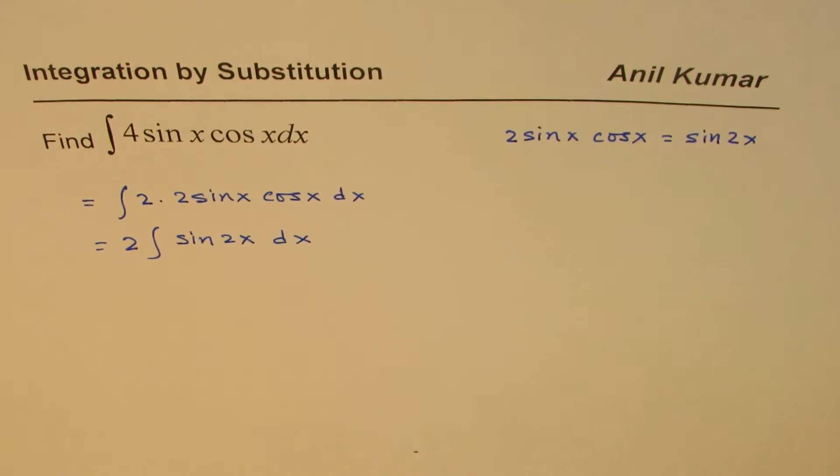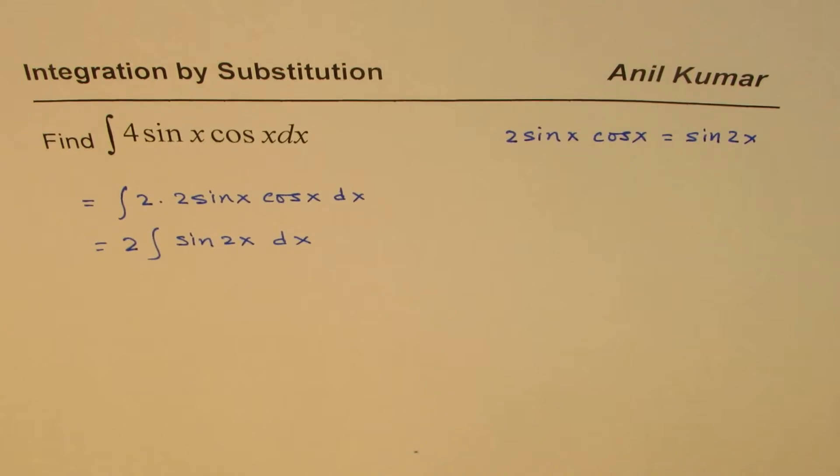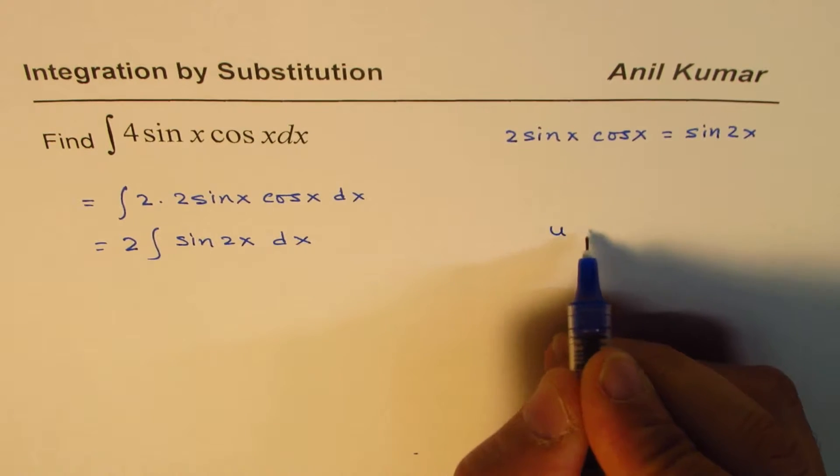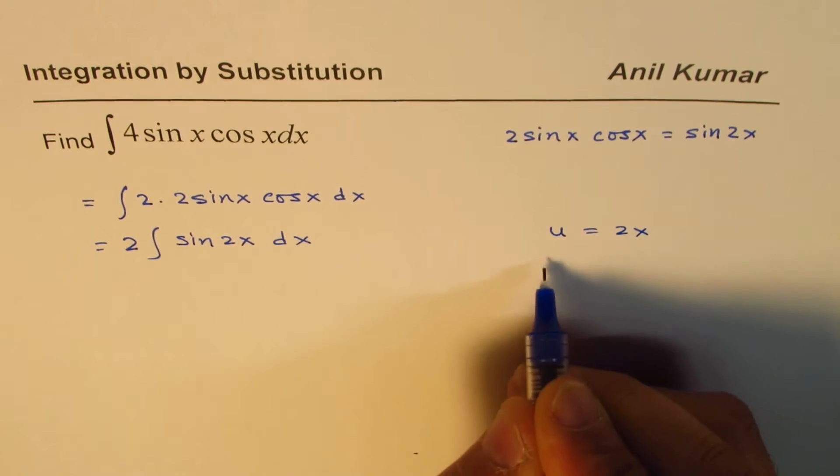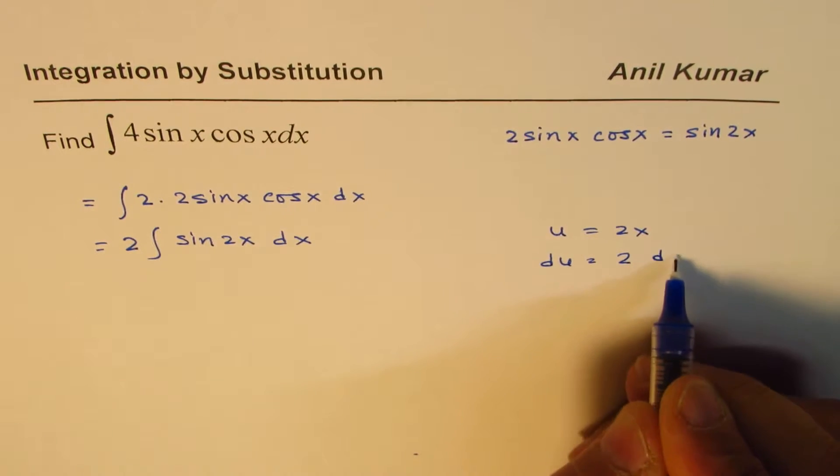Now, we can always integrate this with substitution. So if I substitute u equals 2x, then du will be equals to 2dx, right?